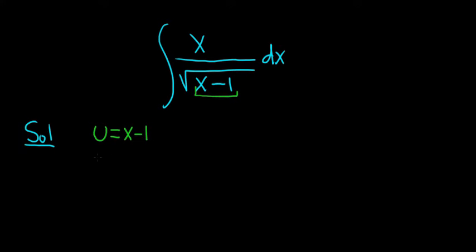Taking the derivative of both sides, we get du equals dx. Okay, and so now we're kind of stuck, because we don't have an x here. We just have a du and a dx, and we need to figure out what x is. So one way to do that is to take this equation and solve for x. So we can add 1 to both sides. So we get x equals u plus 1.